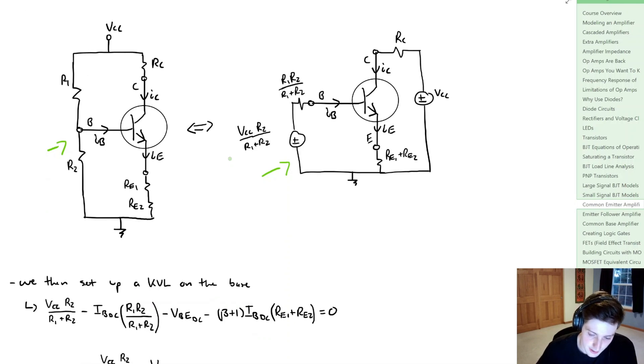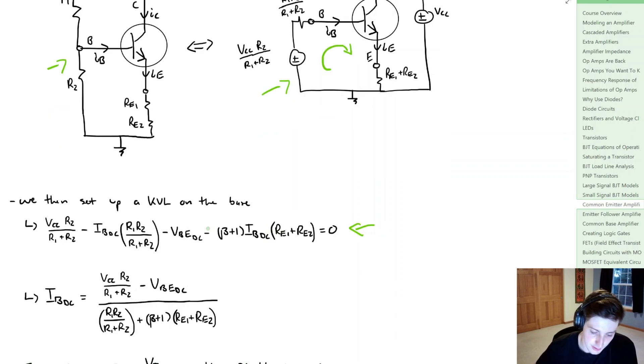Now what we're going to do from this is we're going to set up a KVL around this base loop here, and that's going to allow us to arrive at this term here, which is quite messy. But nobody ever said electronics were pretty, so we just have to deal with this. Now from this, if we know all of our values, we can actually find what that DC base current is.